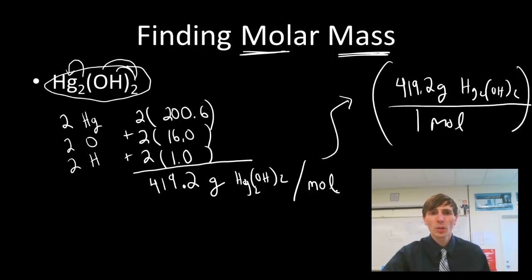So this molar mass is a conversion factor. It is really an equivalent statement. One mole of that substance, one bundle of those atoms, one mole, that's my bundle, it has a mass of that amount of grams, 419 grams. So this is how we find the molar mass. And you can do this for any compound that you can imagine.